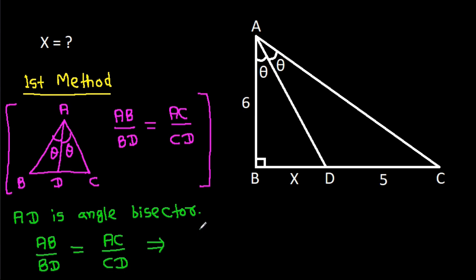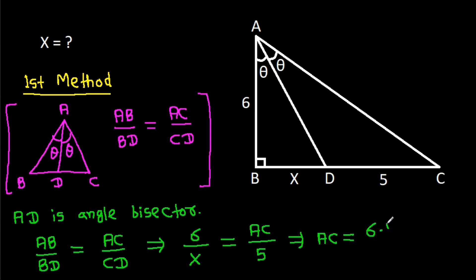AB is 6, BD is X, so 6 over X equals AC over CD which is 5. Therefore AC equals 6 times 5 over X, which is 30 over X. We get AC = 30/X.